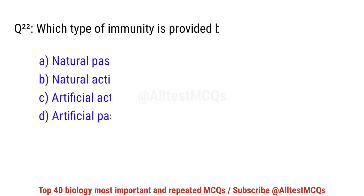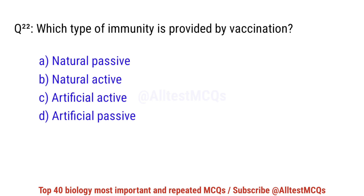Question number 22. Which type of immunity is provided by vaccination? The right option is C: Artificial active immunity.